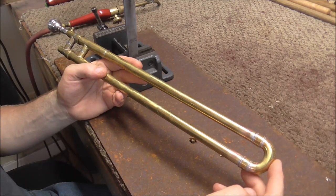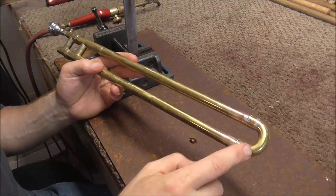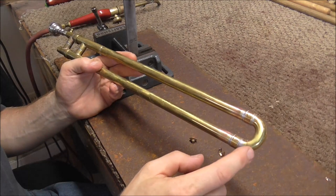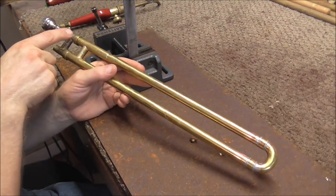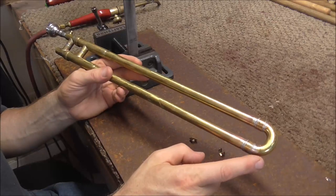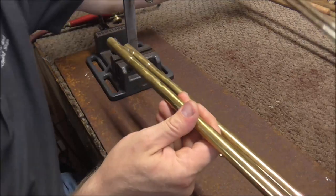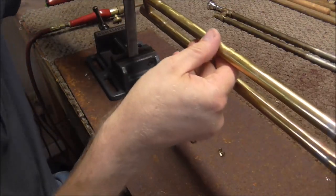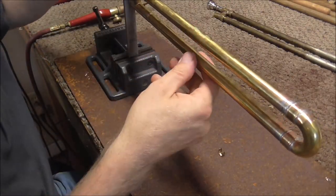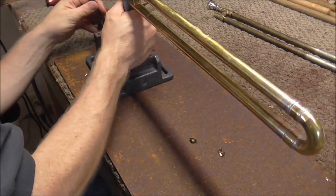Then I will be ready to solder that on. Whenever I solder a water key onto a trombone, I have to be very careful to get it on the right side. Because if you get it on the wrong side, then you have to take it off and do it again. I always remember that the mouthpiece goes onto one side, and then the water key goes on the other side.